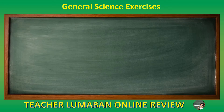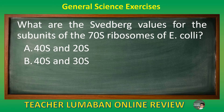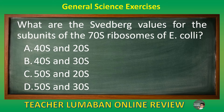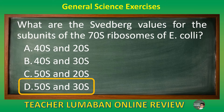What are the Svedberg values for the subunits of the 70S ribosomes of E. coli? Letter A 40S and 20S. Letter B 40S and 30S. Letter C 50S and 20S. Letter D 50S and 30S. The correct answer is letter D, 50S and 30S. The 50S and 30S are the Svedberg values for the subunits of the 70S ribosomes of E. coli.